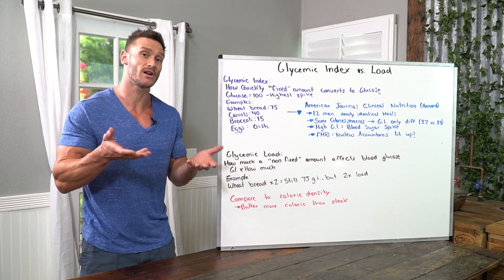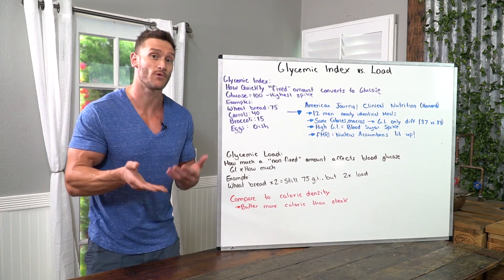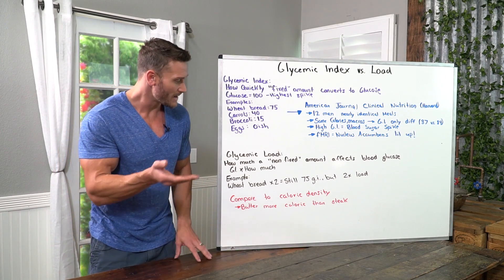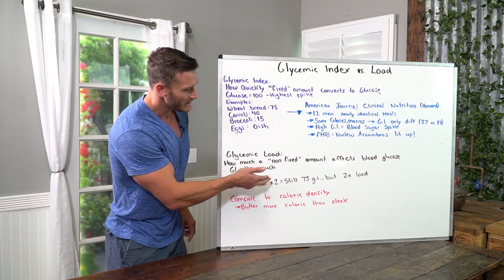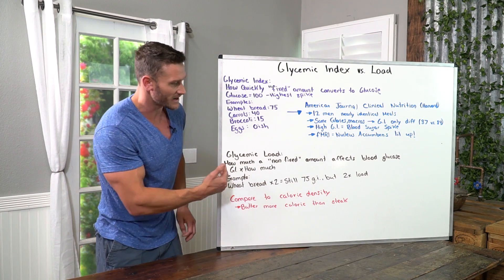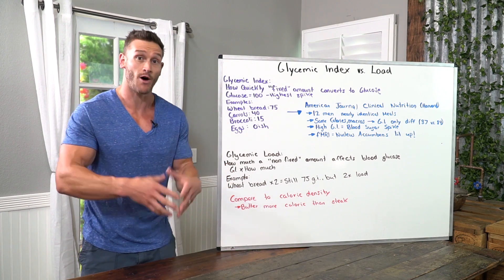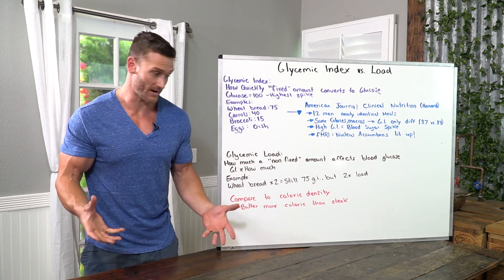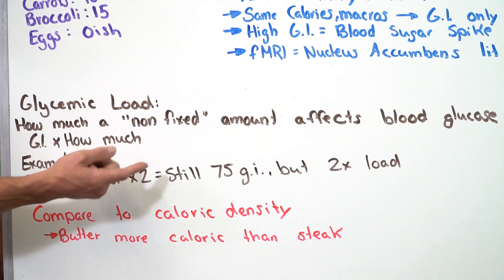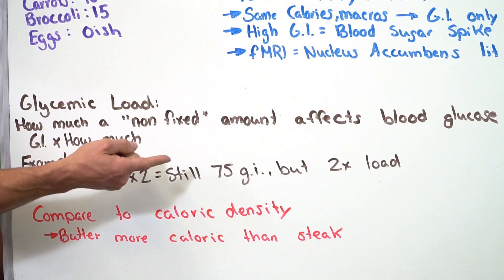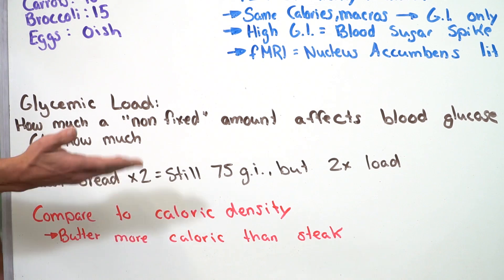Glycemic index still spikes your blood sugar at the same rate of speed, but glycemic load factors in how much of it there is. So in this case, wheat bread times two is still a 75 GI, but two times the load.